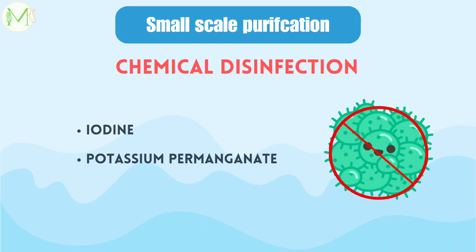Potassium permanganate may kill cholera vibrios, but it is of little use against other disease-causing organisms. It also alters the color, smell, and taste of water and therefore is not used.